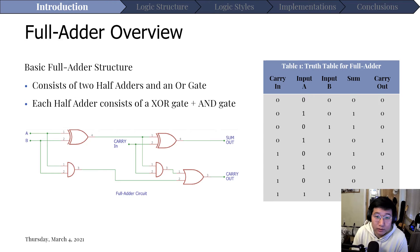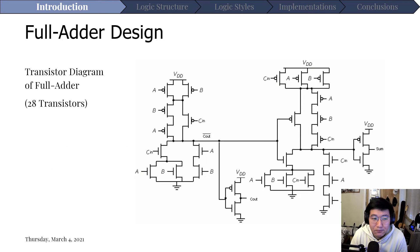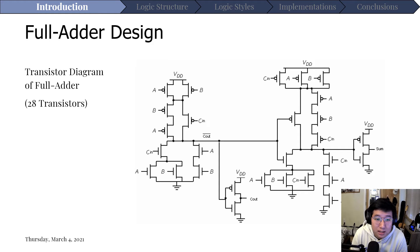Here's a small overview of the full adder. The basic full adder structure has two half adders and an OR gate. Breaking that down to the gate level, you have an XOR gate and an AND gate in each half adder, leading into another XOR and AND gate, and then an OR gate for the carry-out. On the right is the truth table. This is a general CMOS full adder implementation with 28 transistors — this is what's generally considered the standard CMOS design.